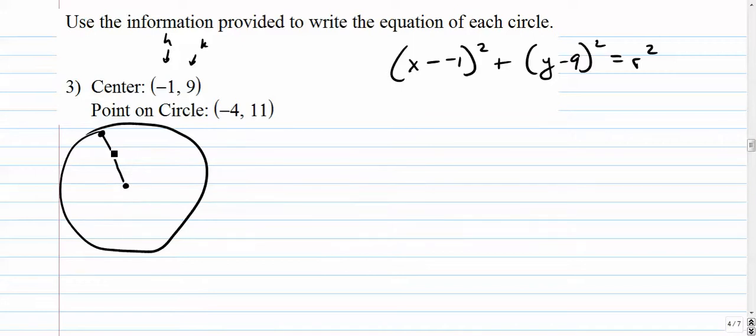Not a very good one, but you know what I'm saying. So this is the center. And we want to find the distance from the center to the point on the circle. That'll be our radius. So we've got to go back to our distance formula. Distance formula looks a lot like the circle formula.